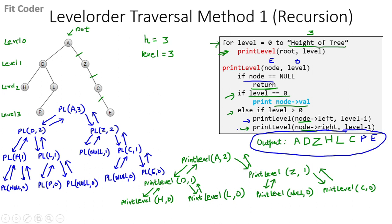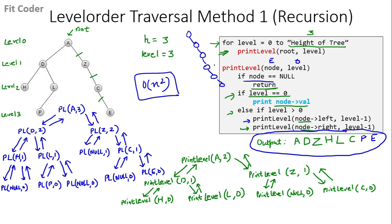In this method we start from the root and go to each level and print the nodes of that level. The time complexity is high — it is O(n²) — because the tree can be skewed with all nodes aligned in one direction, so for printing each node we start from the top and go down to that node. The second method using a queue is more efficient. Let's see that method.